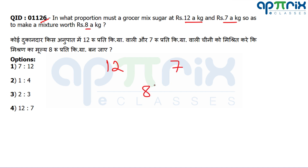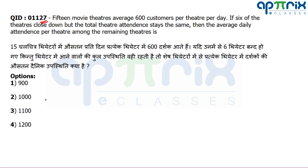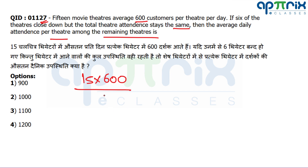Question 26 is straightforward — with values 12, 7, and 8, one ratio four becomes the right answer. Question 27: 15 movie theaters have an average of 600 customers per theater per day, giving a total of 9,000 attendees. If 6 theaters close and total attendance stays the same, the 9 remaining theaters will have an average of 1,000 per theater.